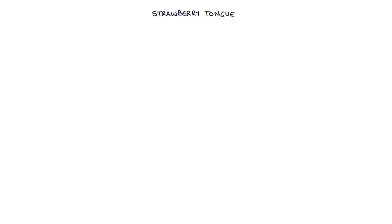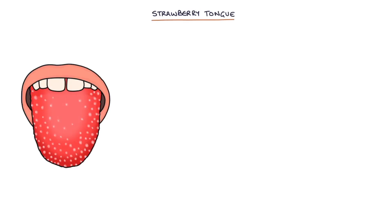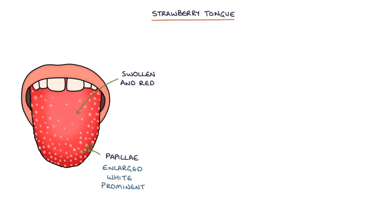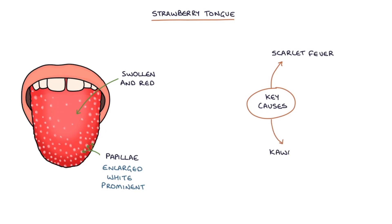Let's talk about strawberry tongue. A strawberry tongue describes when the tongue becomes swollen and red and the papillae on the tongue become enlarged, white and prominent, making the tongue look like a strawberry. The two key causes of a strawberry tongue to remember are scarlet fever and Kawasaki disease. As a result, you're more likely to see a strawberry tongue in children rather than adults.